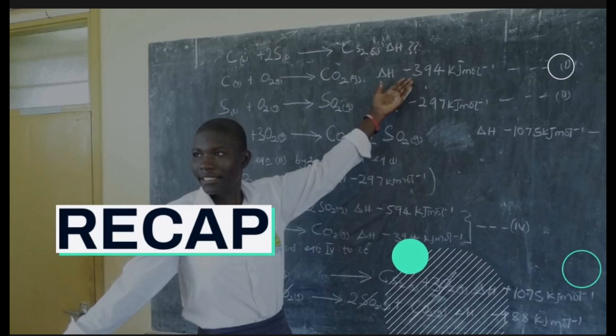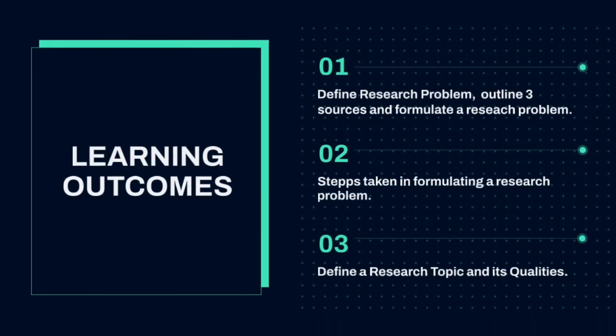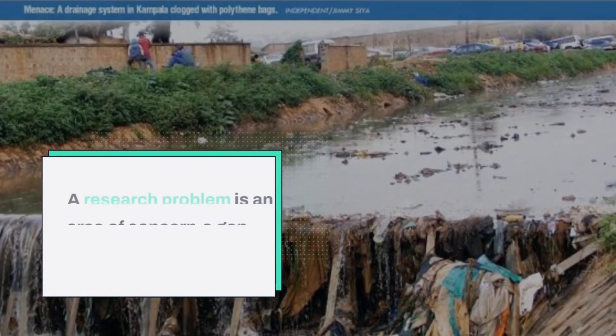Before we dive into today's lesson, let us first look at our learning outcomes. At the end of this lesson, you should be able to define research, outline at least three sources, and learn how to formulate a research problem. We shall also discuss about a research topic and its qualities.